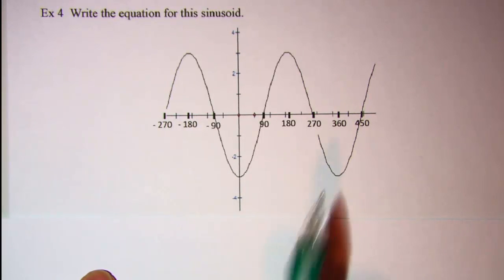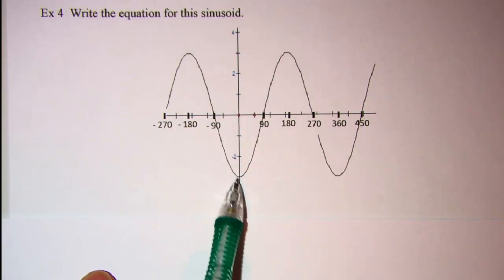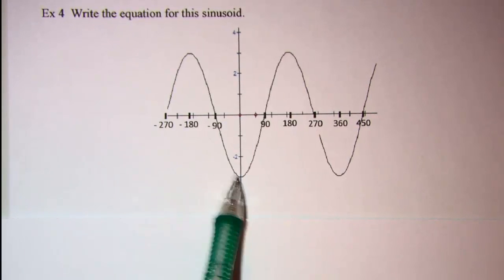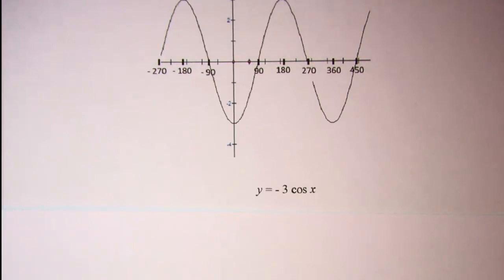We just changed our a value and it looks like negative 3 is the coefficient for our cosine curve. So this equation is y equals negative 3 cosine x.